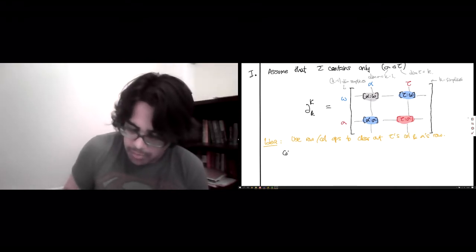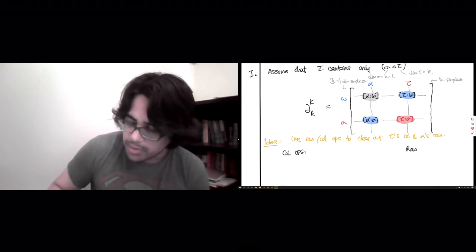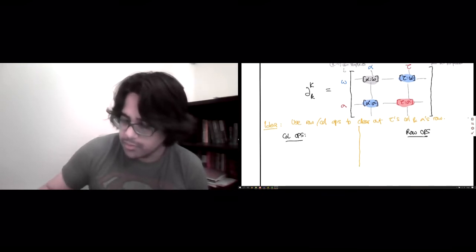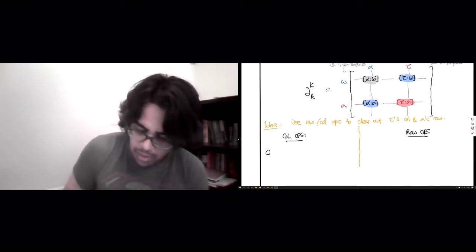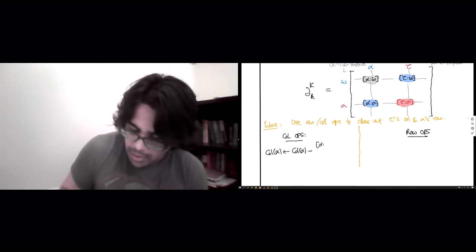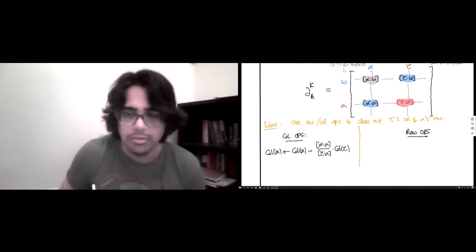So, the column operations we need and the row operations we need are the following. So, let's divide them in two because they're different. So if you stare at that matrix for a while, all you need is that the column of alpha should be modified by the elementary column operation where we add some scalar multiple. And the scalar you need is, of course, alpha sigma divided by tau sigma, the giant minus sign, and all of that should be multiplied by the column of tau.